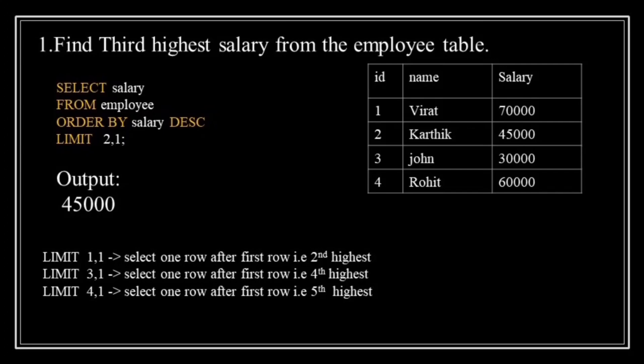If we want to find the second highest salary, use LIMIT 1, 1. For the fourth highest salary, use LIMIT 3, 1. For the fifth highest salary, use LIMIT 4, 1. In this example, it skips the first two rows — Virat and Rohit — and returns the next row. The output would be salary 45,000, which is the third highest paid employee.